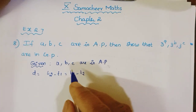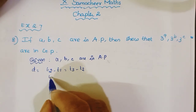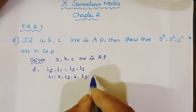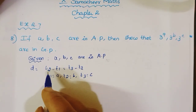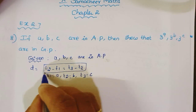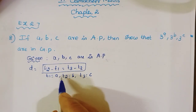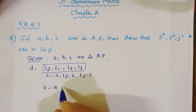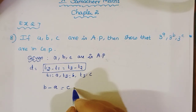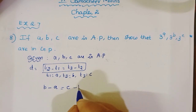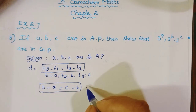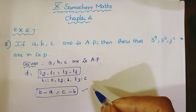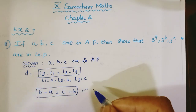Here T1 is equal to A, T2 is equal to B, T3 is equal to C. Since A, B, C are in AP, we have B minus A is equal to C minus B.